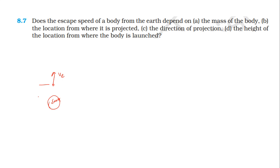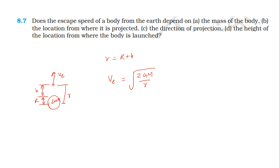The distance from the earth surface is the position h. The radius of the earth is R, and the distance from where we are projecting from the center of the earth, small r, equals capital R plus h. The escape velocity is equal to the square root of 2 times g times the mass of the earth divided by small r, that is R plus h.